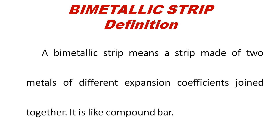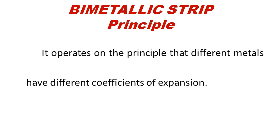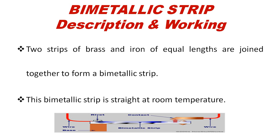The next topic is the bimetallic strip. From the word itself we can understand: 'bi' means two, so two different metals. The expansion coefficients of the two metals are different — this is what we call a bimetallic strip. It operates on the principle that different metals have different coefficients of expansion. Here we use brass and iron.